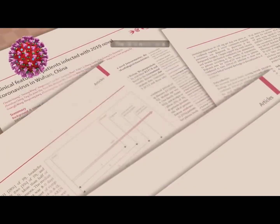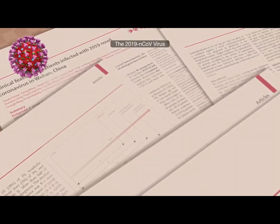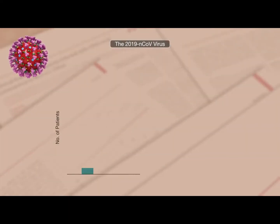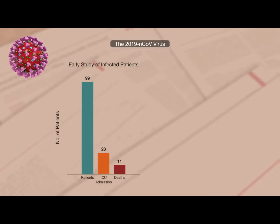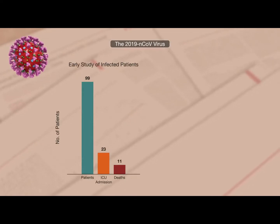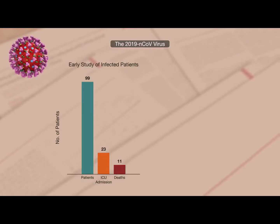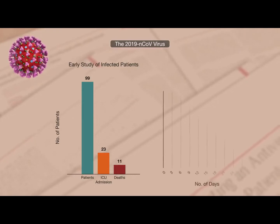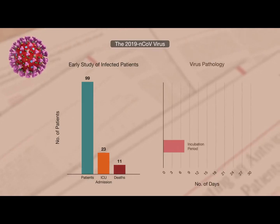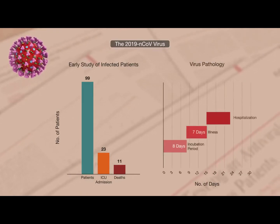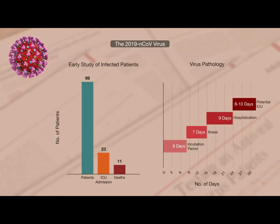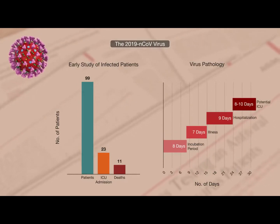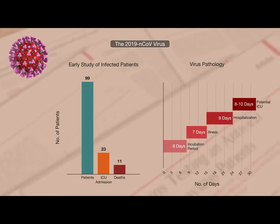Much is yet to be known about the 2019 novel coronavirus. An early study of 99 infected showed a high mortality of 11%, similar to SARS, and ICU admission rates of 23%. An earlier study described a virus pathology with an eight-day incubation period, a week of infection, followed by a potential escalation to hospitalization and intensive care over another 8 to 10 days.